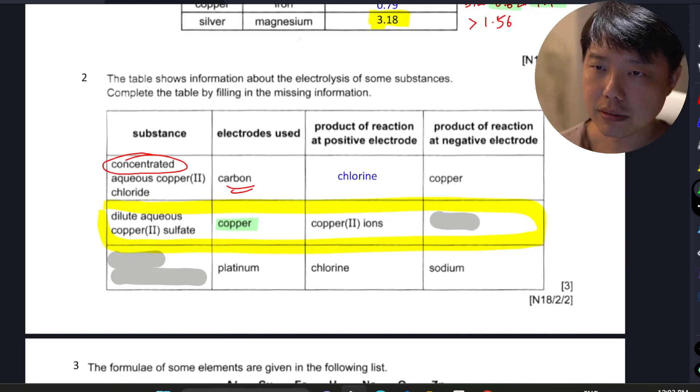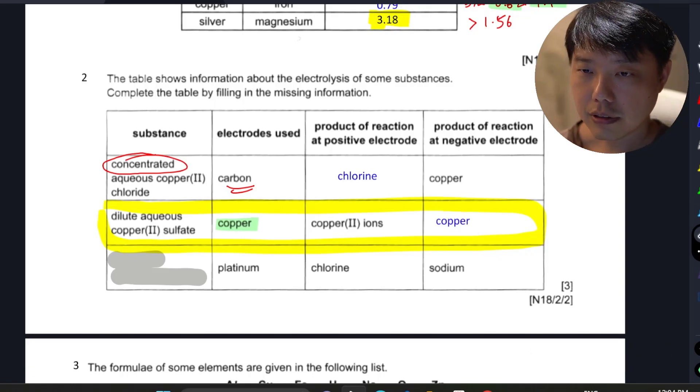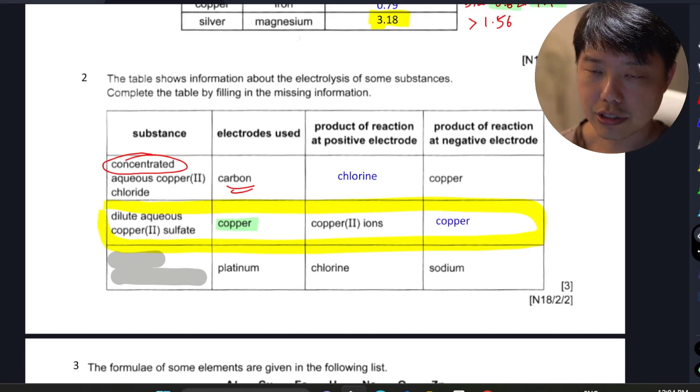So when copper metal is used, then obviously at the positive electrode, which is your anode, copper two ions will be discharged. But same thing here, because copper is less reactive than H+, copper will be preferentially discharged at the cathode, which is the negative electrode. So copper is discharged.